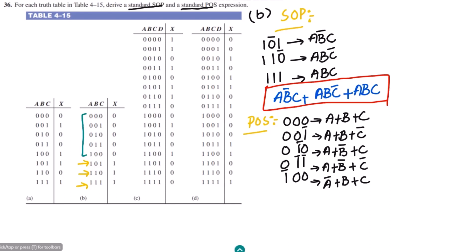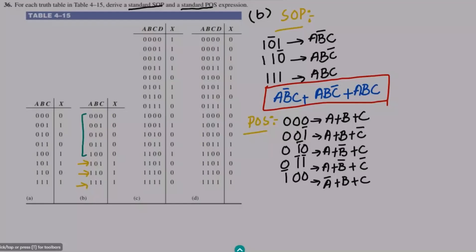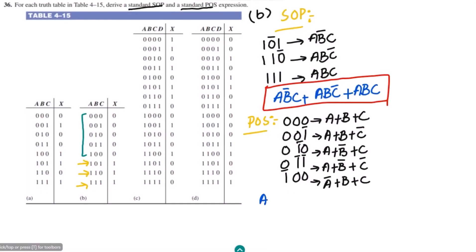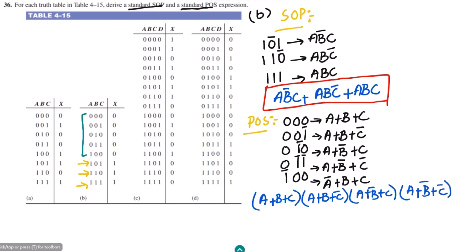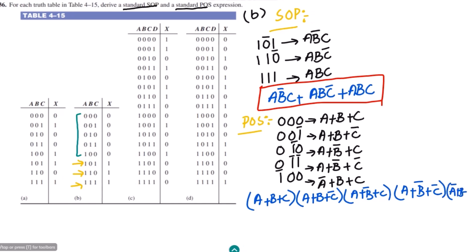Now we multiply these sum terms together. The product of sum expression is: (a+b+c)(a+b+c')(a+b'+c)(a+b'+c')(a'+b+c). That completes the product of sum expression for part B of our question.